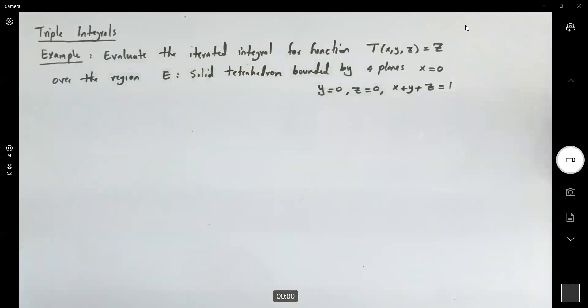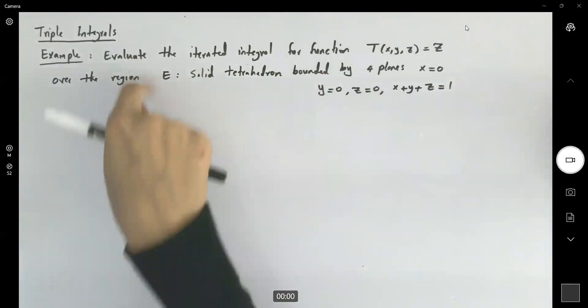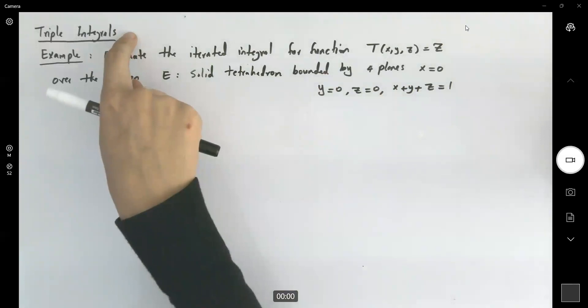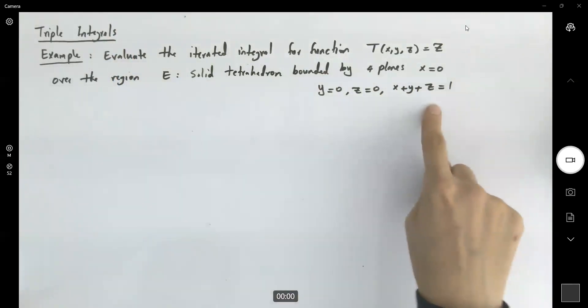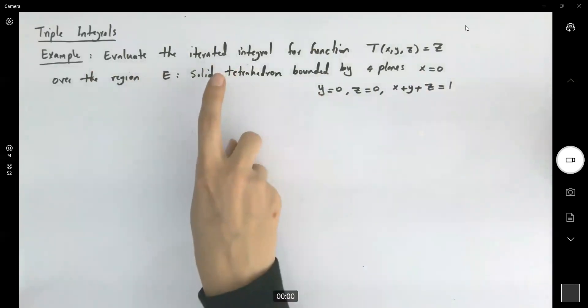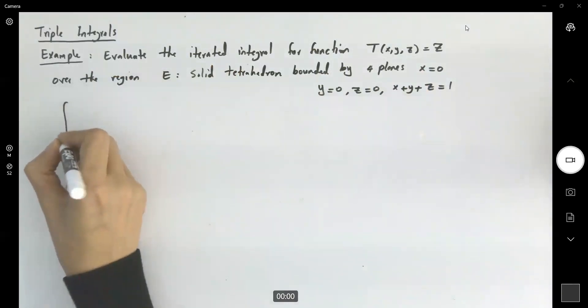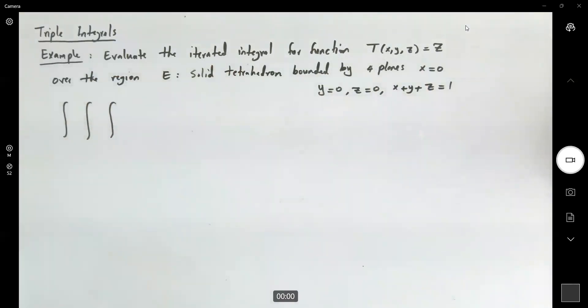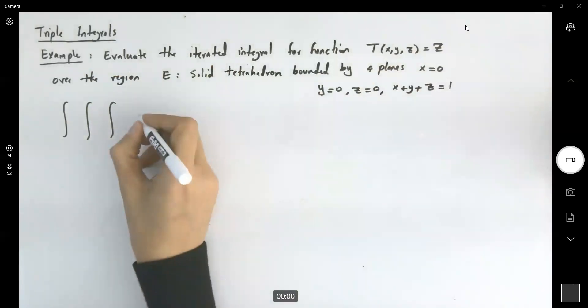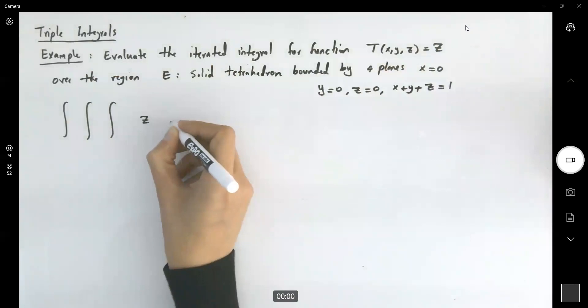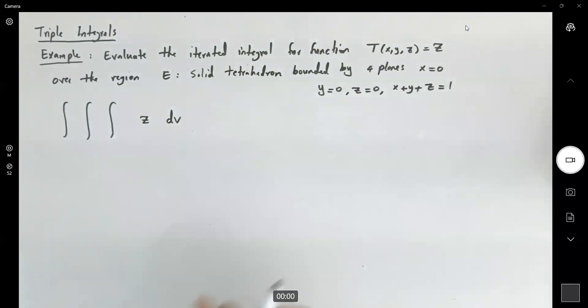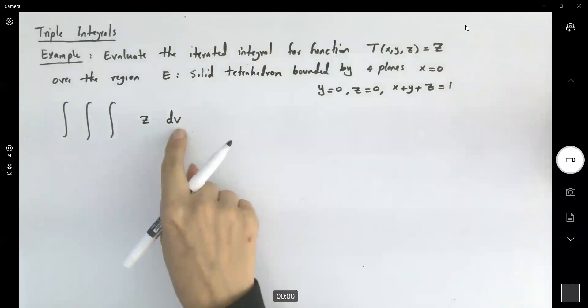So how do we calculate the iterated integral? This is an example where you're going to use a triple integral instead of a double integral. Here you have three different variables, x, y, and z, that all play in calculating and evaluating the iterated integral. So you're going to set a triple integral for each of the variables.